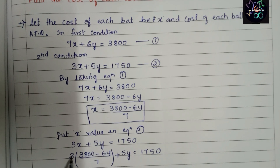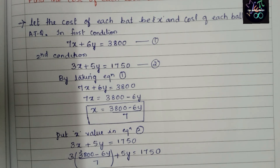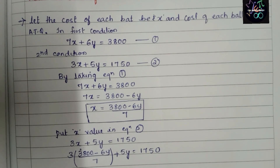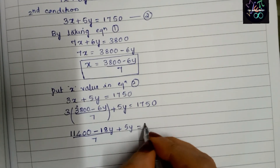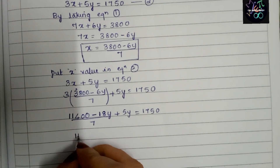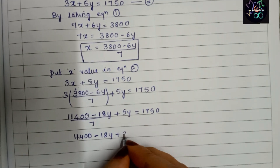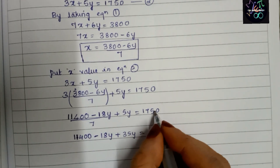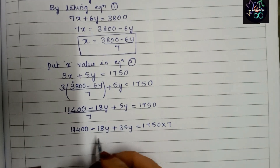We cannot cancel directly, so we multiply through. Three times (3800 − 6y) gives 11400 − 18y, all over 7, plus 5y = 1750. Multiplying the entire equation by 7: 11400 − 18y + 35y = 1750 × 7. Computing 1750 × 7 gives 12250.